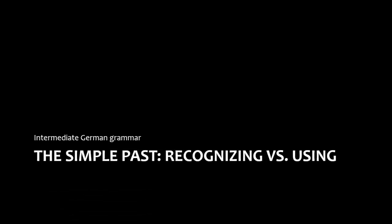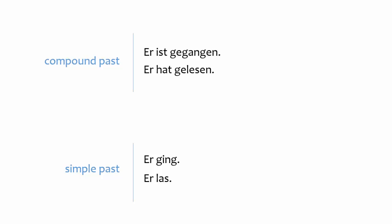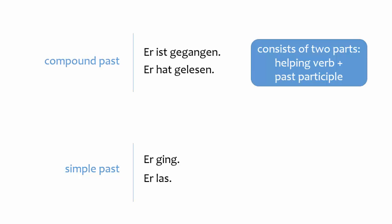This presentation explains how intermediate German students will generally use the simple past tense. To talk about things in the past, German most often uses the compound past, also known as the present perfect. The compound past consists of a helping verb and a past participle. If you need a refresher on the compound past or the differences between English and German past tense usage, those videos are in the playlist.